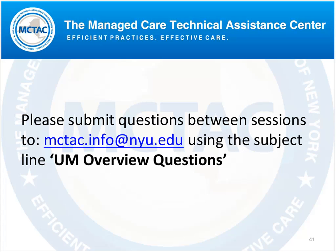Another question: what type of educational background is recommended for UM staff and supervisor? We recommend that for both the UM staff and supervisor, they either be a licensed RN or licensed as a professional with certification or expertise in the specialty being reviewed — such as behavioral health, physical health, or home and community-based services.